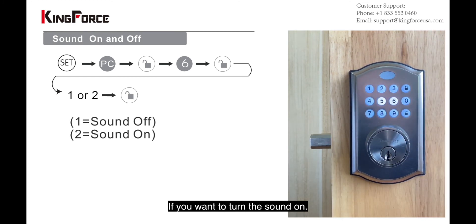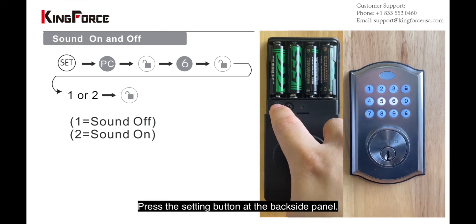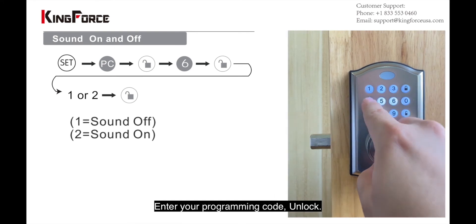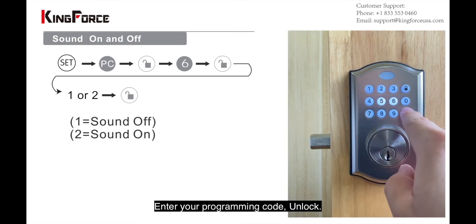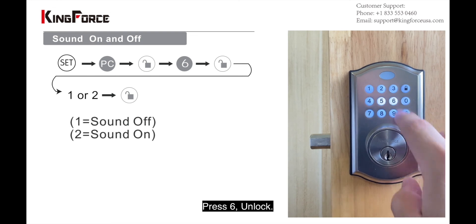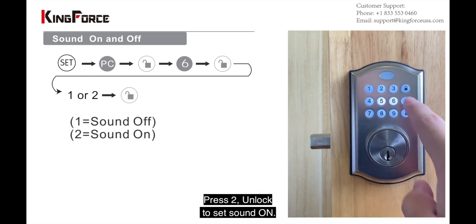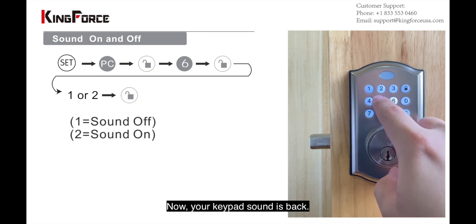If you want to turn the sound back on, press the setting button and enter the programming code, then unlock. Push number six and unlock, then push number two and unlock. Now your sound is back on.